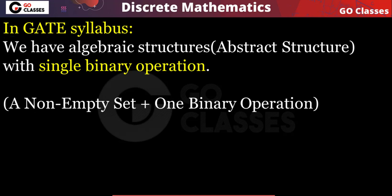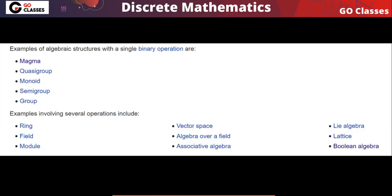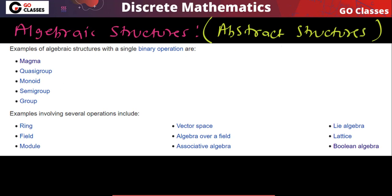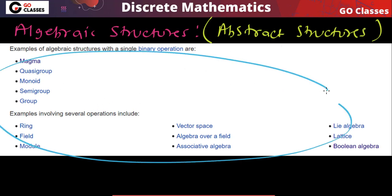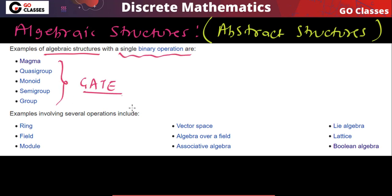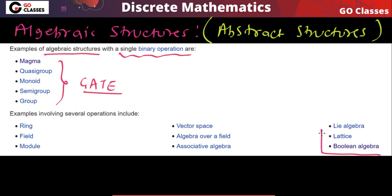In the GATE syllabus we have a non-empty set with a single binary operation. All of these are algebraic structures of different types. Some structures have a single binary operation — those are in the GATE syllabus. Structures with several operations such as lattice and Boolean algebra are also in the GATE syllabus, as special cases we have already studied.